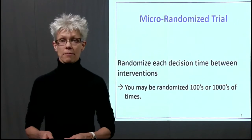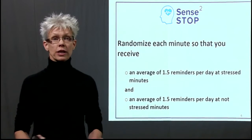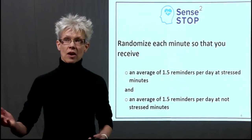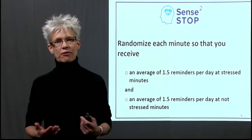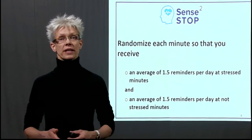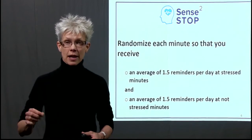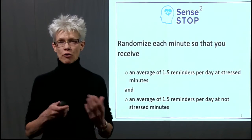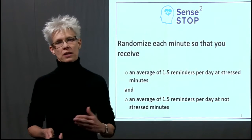Let's go back to Sense to Stop. In that context, every minute during a 10-hour day, one is being randomized. We choose these probabilities so that across days, on average, one and a half messages will occur — about three messages every two days when you're currently stressed, and around three messages every two days when you're currently not stressed. As you can imagine, since randomization is occurring every single minute of a 10-hour day, the randomization probabilities are pretty low. The whole purpose is we don't want to overburden someone with many, many messages.